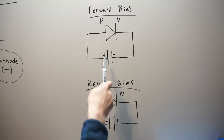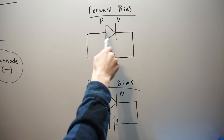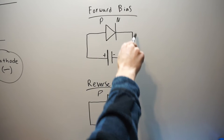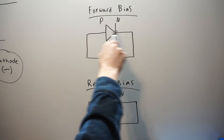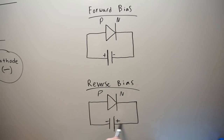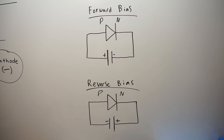Another way to look at it: if the diode was not here and there was just a wire, conventional current would flow from positive to negative. If that current would flow in the direction the diode is actually pointing, current flows through the diode. If the current would flow against the direction the diode is placed in the circuit, that's why we call it reverse bias, and current is not allowed to flow through in that configuration.